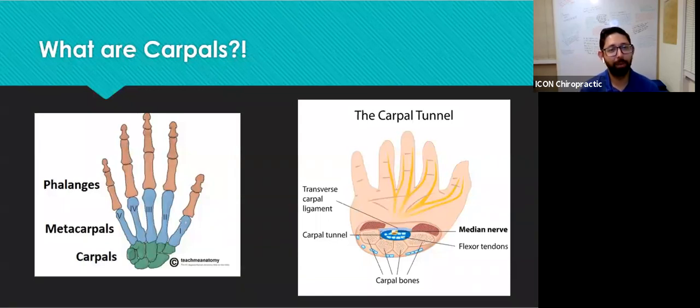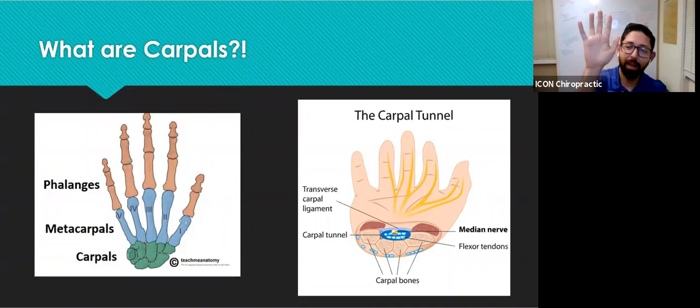Before we can talk about what carpal tunnel syndrome is, we need to know what are carpals. We're going to go over a very brief anatomy lesson of the hand. You have 27 bones in your hand: your phalanges, which are your fingers; your metacarpals, located within the palm; and at the base, your carpals, which are made up of eight bones.